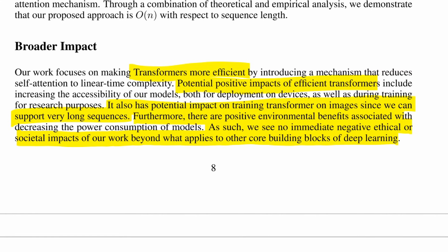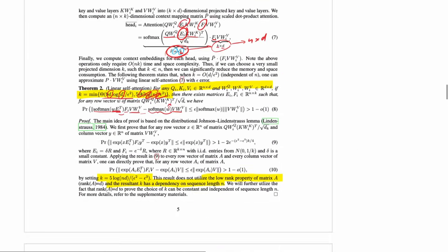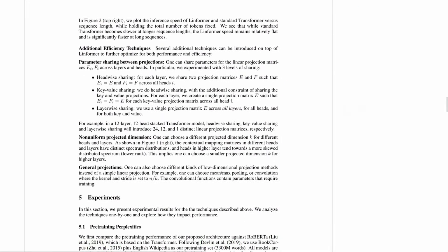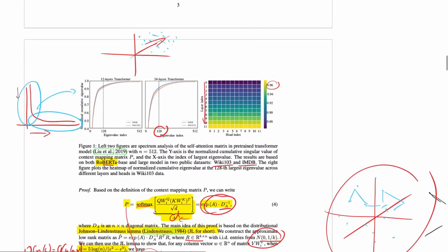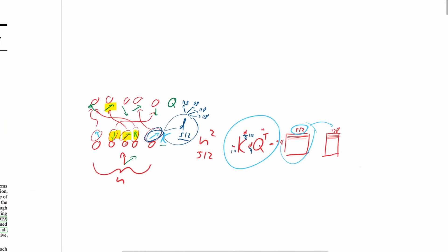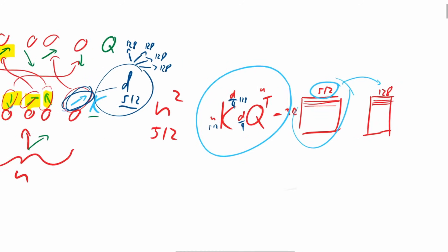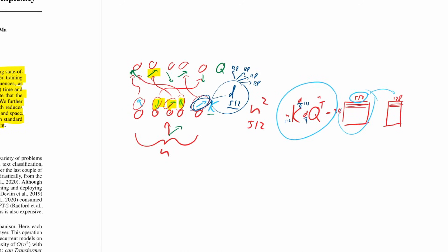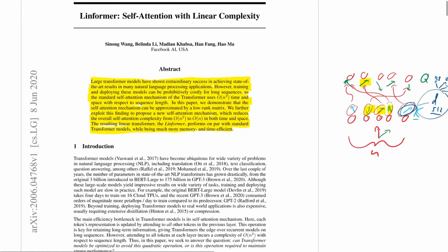Alright, back to past Yannick. This was the Linformer paper — I hope it made sense. I had to read it multiple times for it to make sense to me. But ultimately, it's all about the fact that you have multiple attention heads, so your information is probably lower-dimensional, and you can exploit that by just calculating in this lower-dimensional space. I'll see you next time, bye bye.